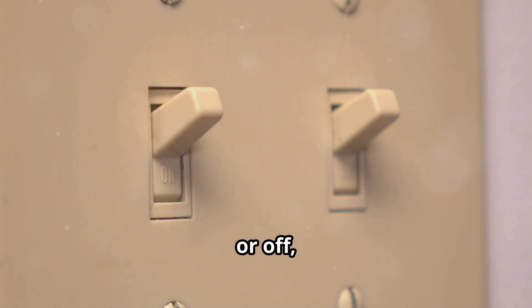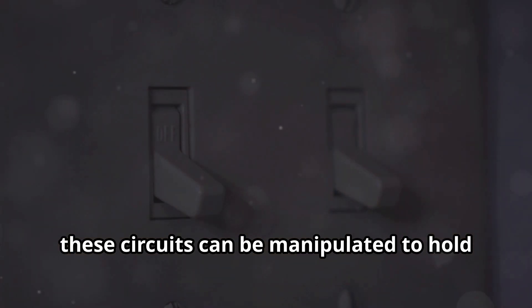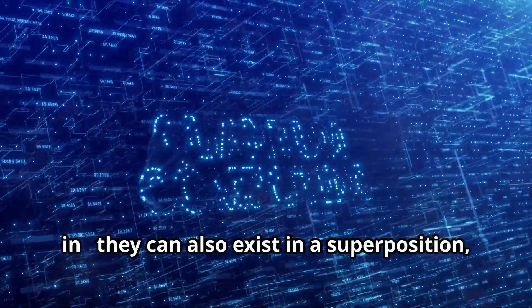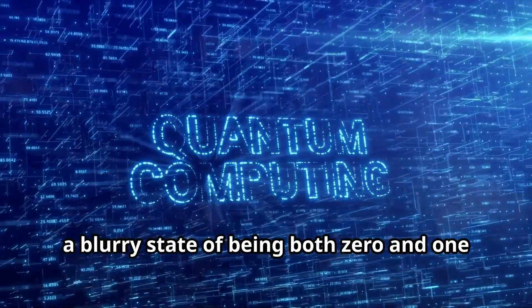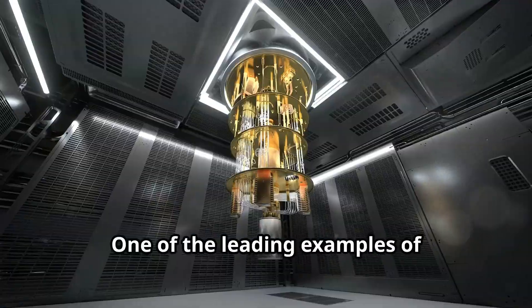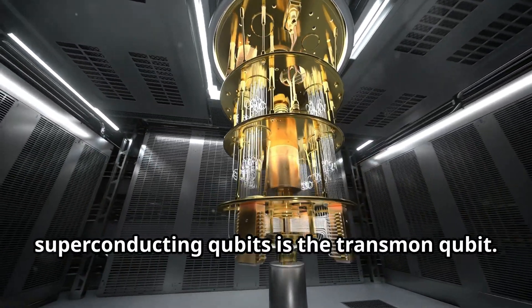Just like a light switch can be either on or off, these circuits can be manipulated to hold a zero or a one. But here's where the quantum magic kicks in: they can also exist in a superposition, a blurry state of being both zero and one at the same time.